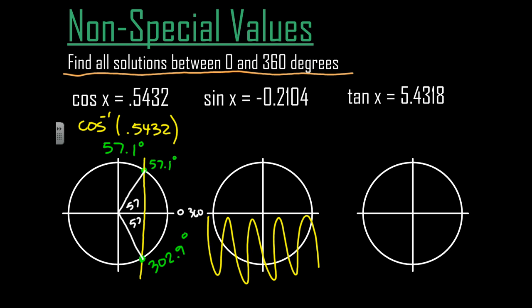Alright, well if I use my calculator and find to the nearest degree what that value is, I type in inverse sine of negative 0.2104, I get a value of negative 12.1 degrees. So when I type this into my calculator here, just like so, I type in the inverse sine of 0.2104 negative, I get a value of negative 12.1 degrees.